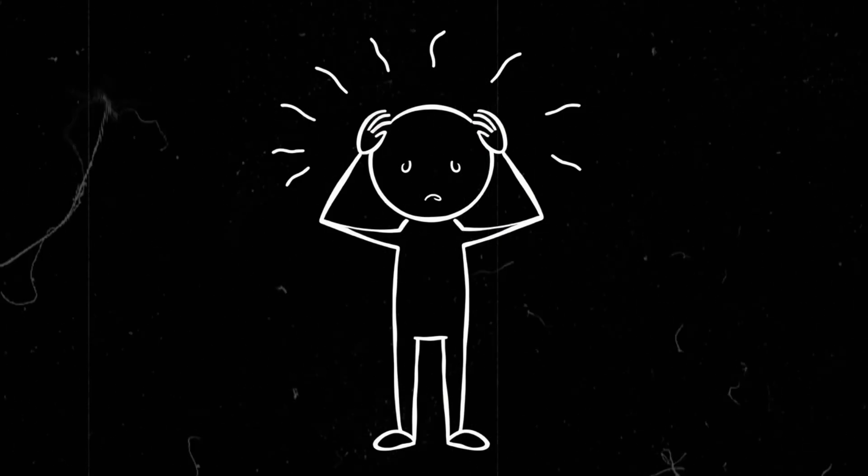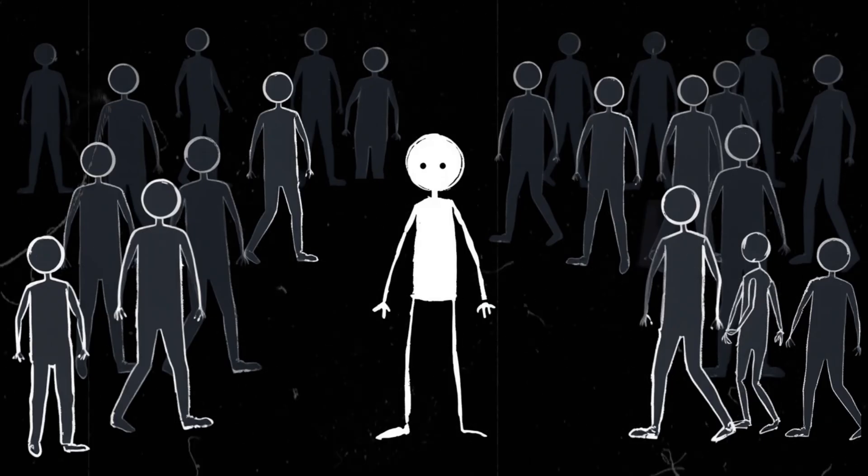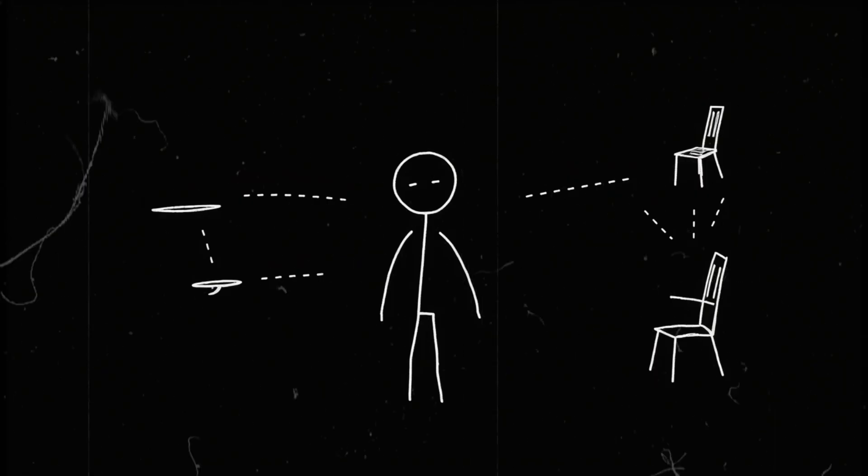And then there's the issue of overload. Imagine being in a crowded room, hundreds of people talking, moving, interacting, and you're seeing flashes of everything that's about to happen. A waiter's about to drop a tray. Someone's about to sneeze. A chair is tipping over. Your brain is processing all of it before it even happens.